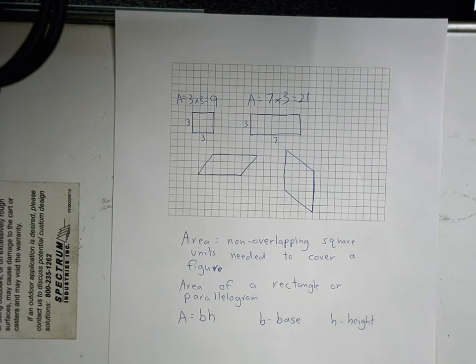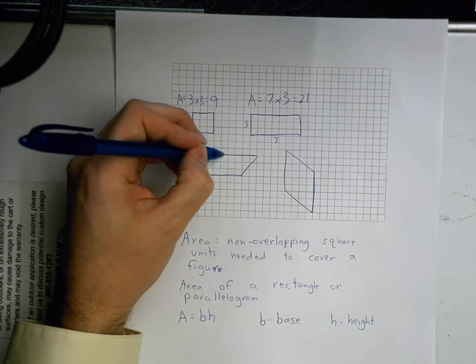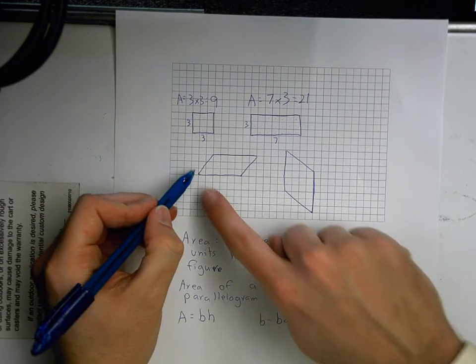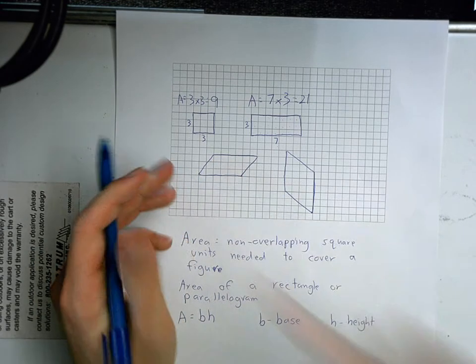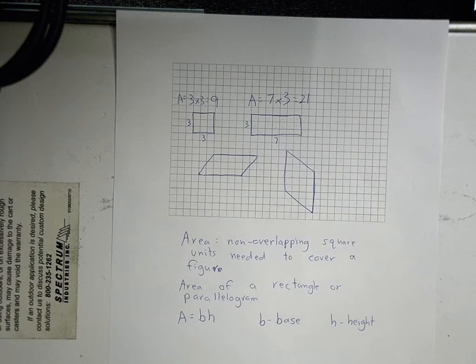Now parallelograms still use this formula base times height, but you might think, is the height going this way? So do I measure how long this is? Cause I can't just use my graph cause the diagonals, it's more than two or three. So here's what I do.